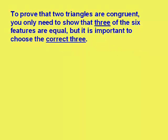Now, to prove that two triangles are congruent, you need only show that three of the six features are equal. But it's important to choose the correct three. In other words, you've got three angles, three sides. You have to choose the right three of those six objects in order to prove that two triangles are congruent.